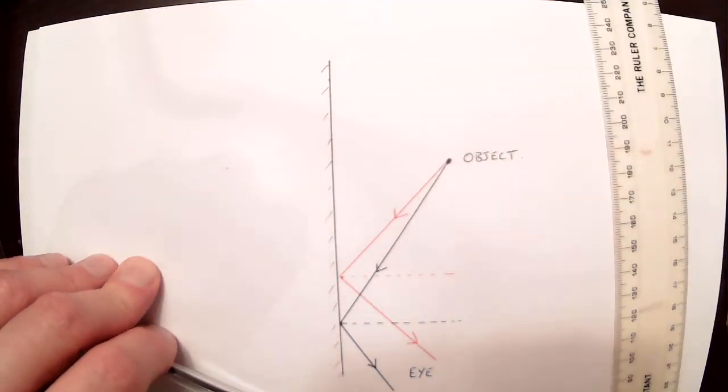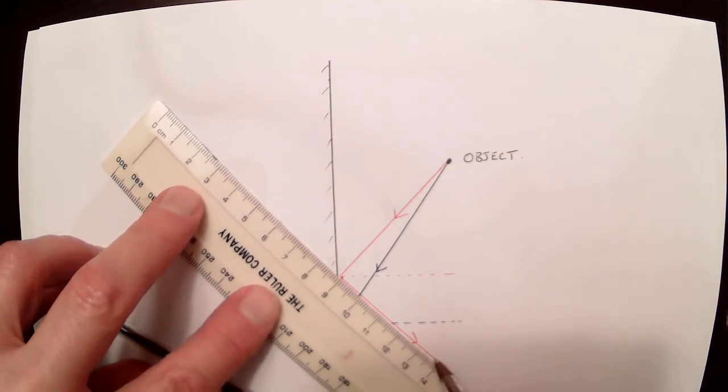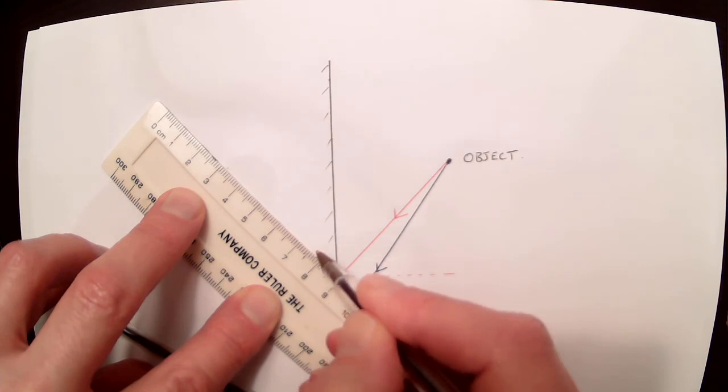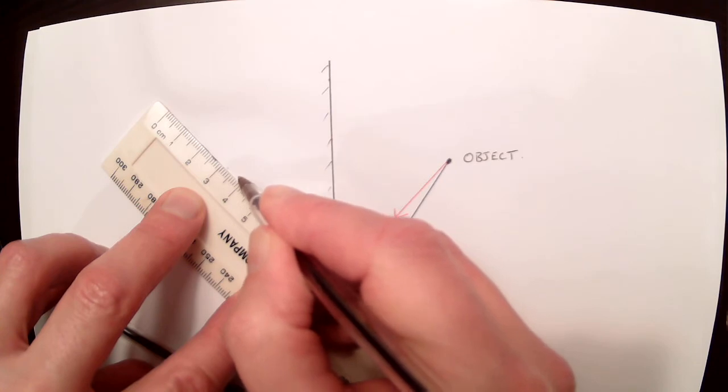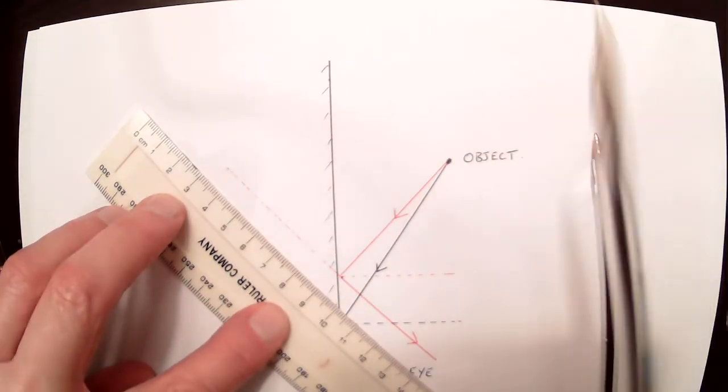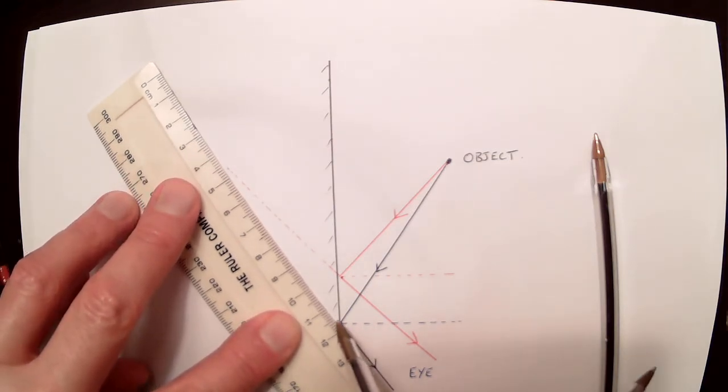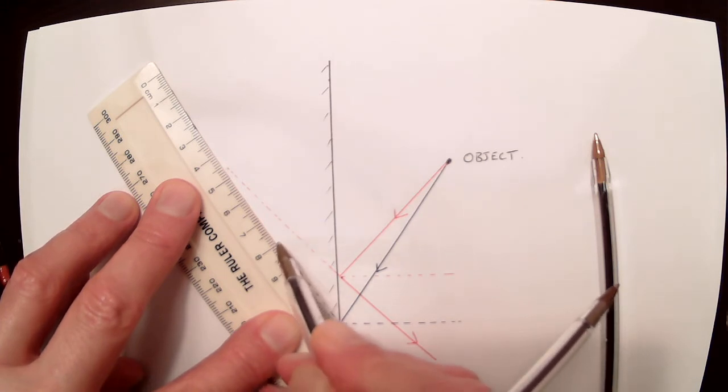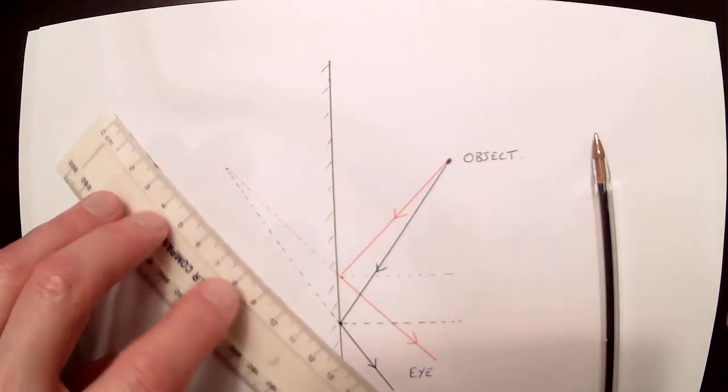So whereabouts is it that those rays of light appear to come from? Let's go back to the red ray here. And if I draw in a dashed line and continue that across, then stop it about there and do the same for the blue ray of light. So that goes back along to here. And then what you see is that these two rays of light meet up at a point there.